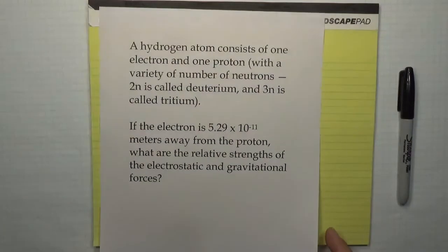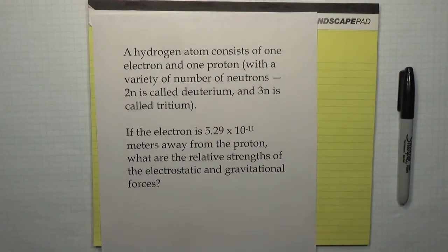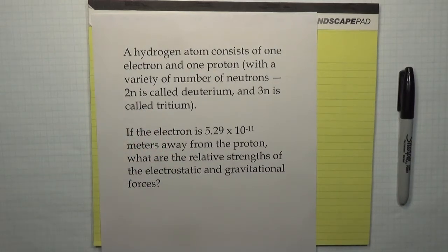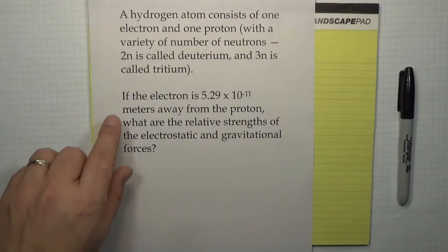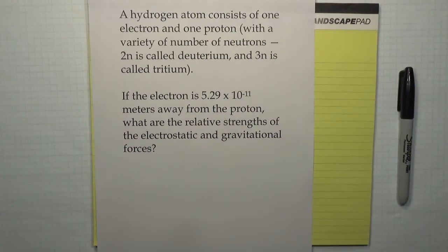So let's just think about a hydrogen atom. A hydrogen atom in its simplest form can be considered an electron orbiting around a proton. The hydrogen atom can come in different forms that have multiple neutrons in its nucleus, but let's just consider the single proton case. And what I want to know is if I know the distance that the electron is away from the proton, what is the relative strength of the electrostatic, the Coulomb force, compared to the gravitational force?